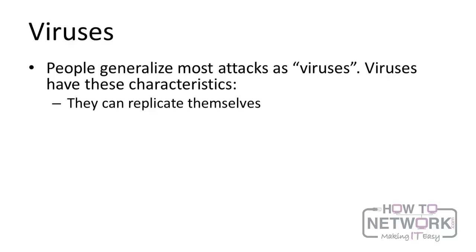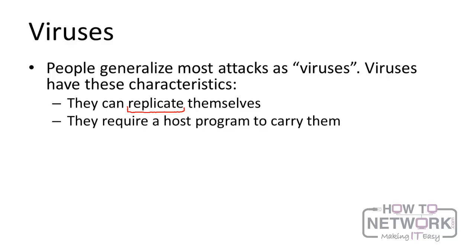First, a virus is self-replicating. Think about that like a virus that infects you — it replicates itself over and over again, and that's how it makes you sick. This means they can reproduce and spread copies of themselves throughout the network. Next, they need a host program in order to be installed on a system or get access to the network. A virus doesn't just happen — it requires someone doing something that allows that virus onto the system, such as downloading from an untrusted source, a website, or an email attachment. Viruses hide inside these programs and wait until the host is installed before they enter the system.